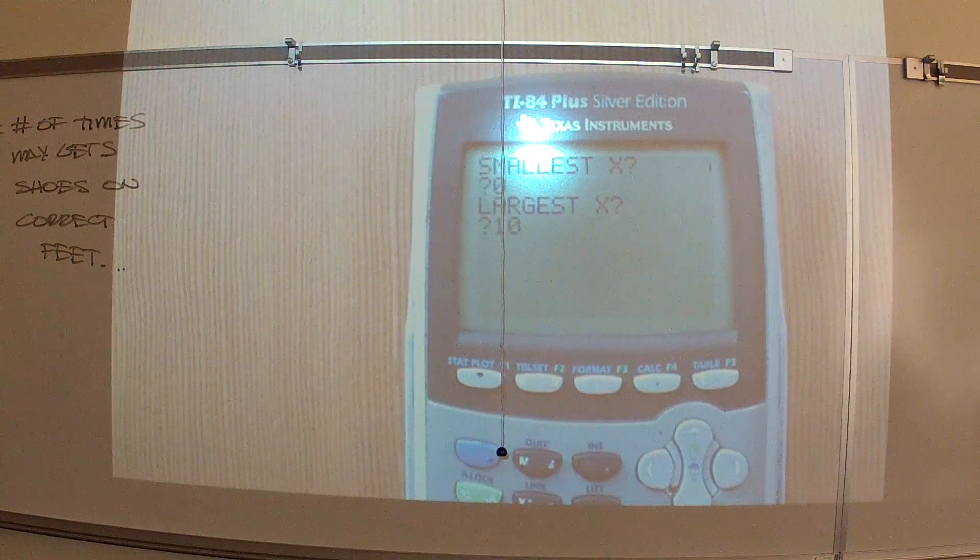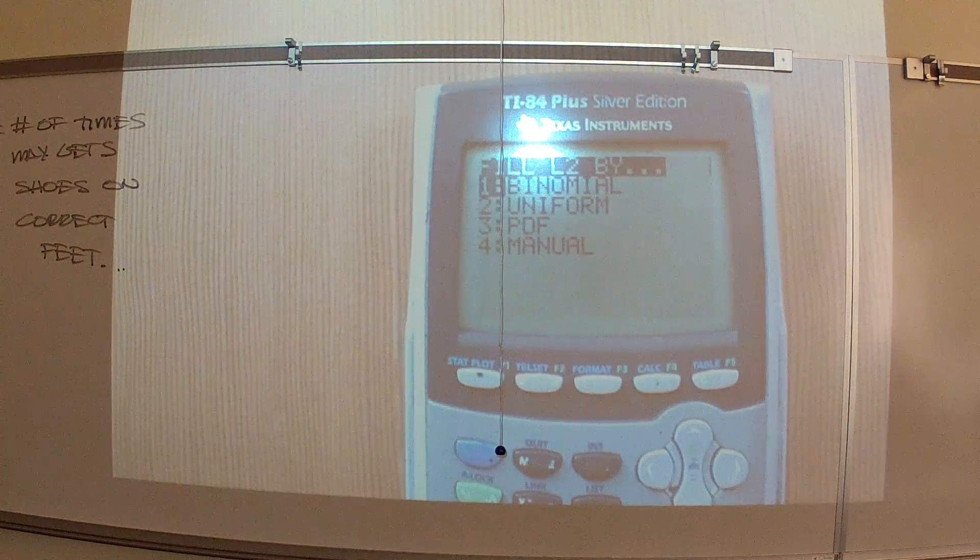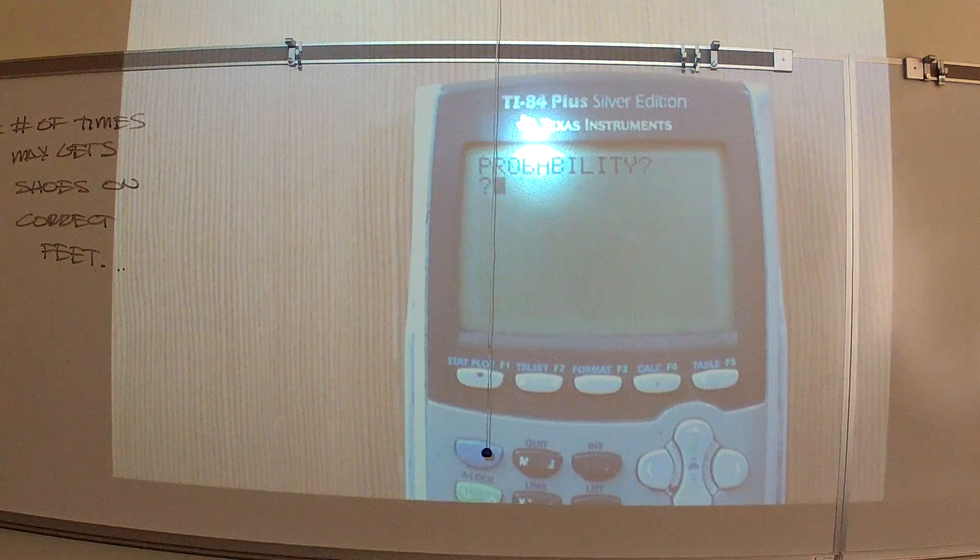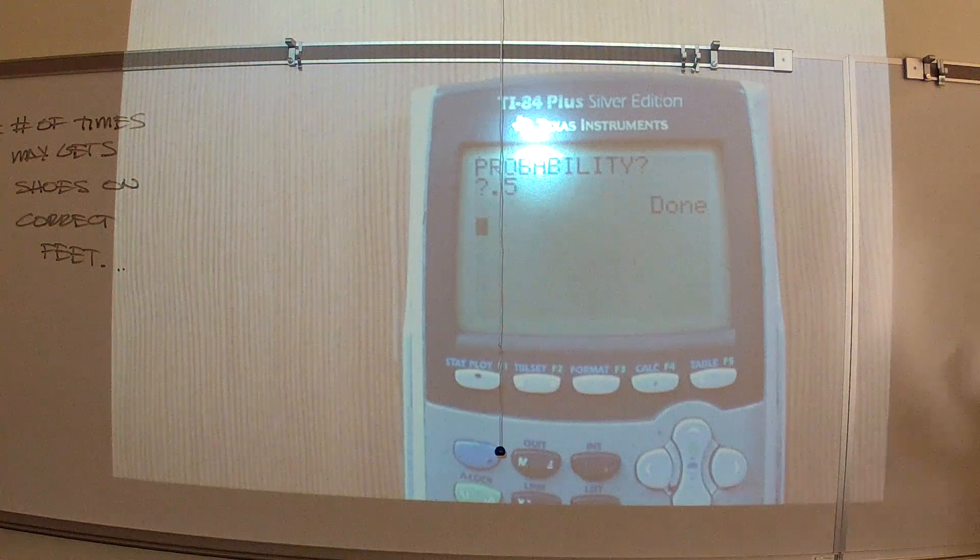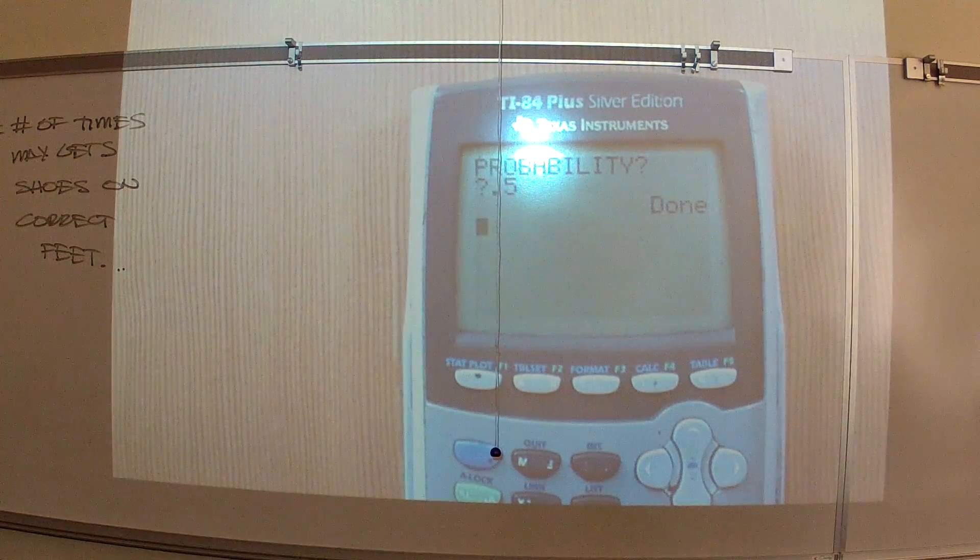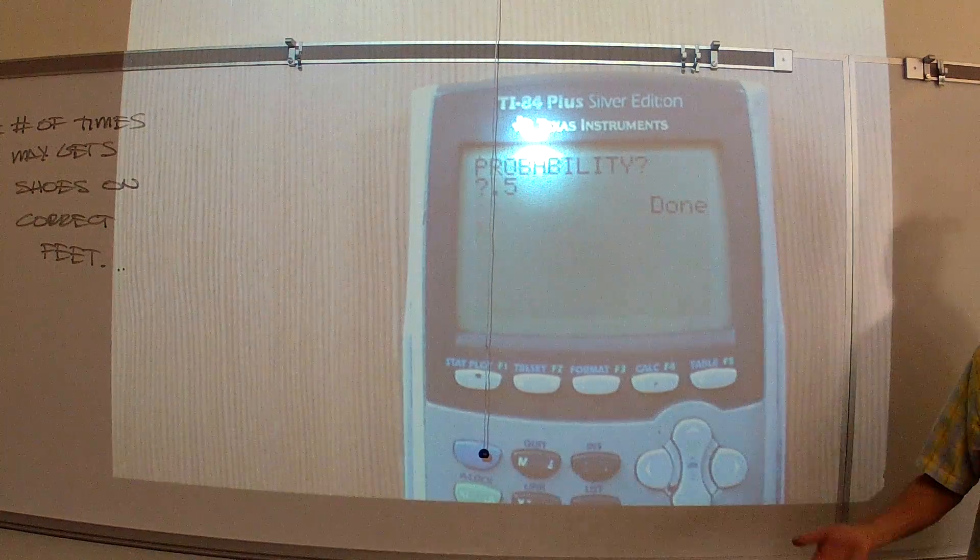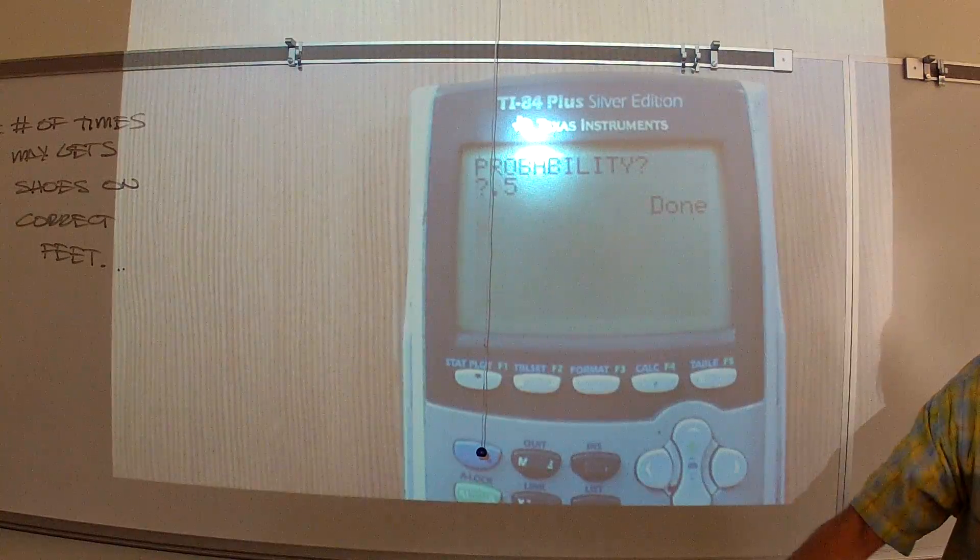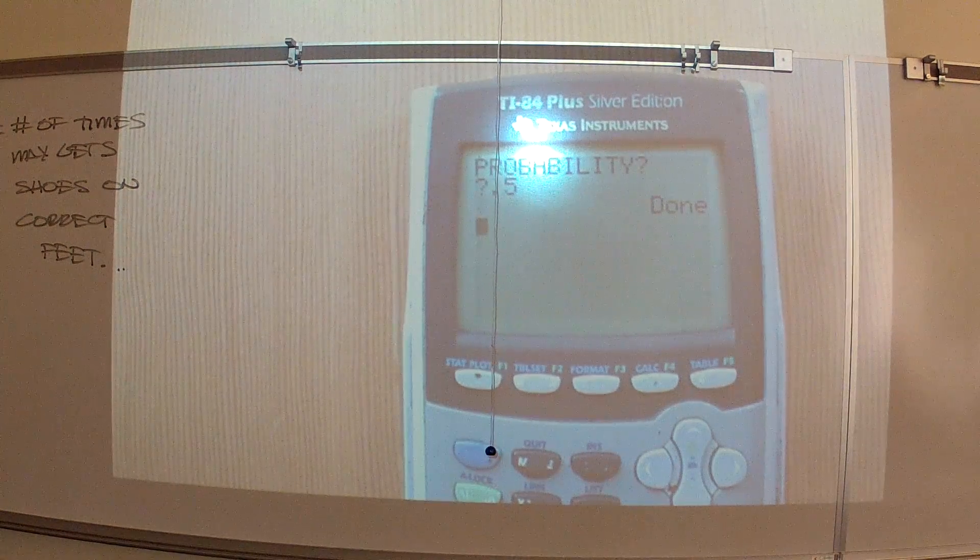So, we're going to go back to program, dist fill. Smallest x is zero. Largest x? Ten. He might get them all on the correct feet every single time too, right? It's going to be very quick. Fill with binomial, yes. Probability 0.5. There we go. Done. This is flipping a coin. This is the same as flipping a coin ten times. Exactly the same thing. This is your perfect coin. This is no longer chickens. This is if all the baby birds got thrown in one big pot. We didn't sex them. They're all together now.